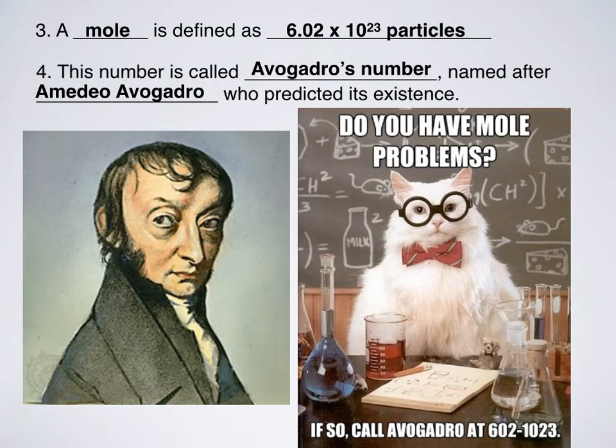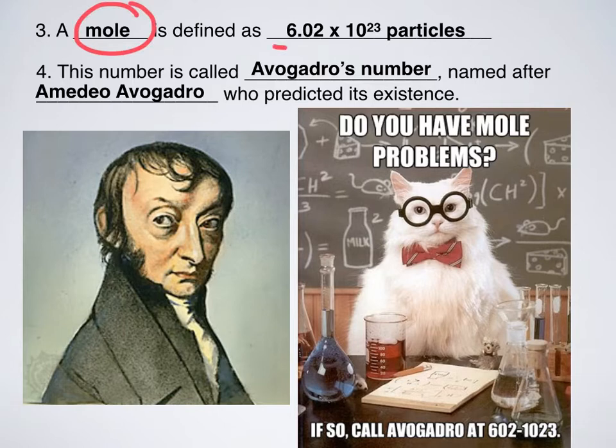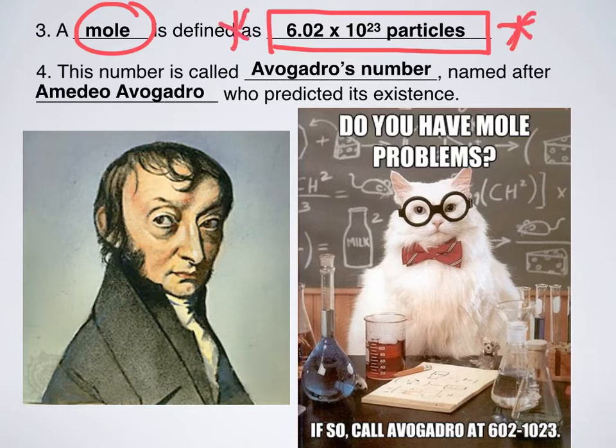So what is a mole defined as? Mathematically, a mole is equal to 6.02 times 10 to the 23rd particles. Now, put a star next to this, highlight it, do something, because this is probably the most important number in all of chemistry. Everything's going to come back to this number in second semester. So make sure you know 6.02 times 10 to the 23rd particles is what a mole is.